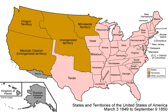Most northern Whigs, led by William Henry Seward, who delivered his famous higher law speech during the controversy, opposed the compromise as well because it would apply the Wilmot Proviso to the western territories and because of the pressing of ordinary citizens into duty on slave hunting patrols.